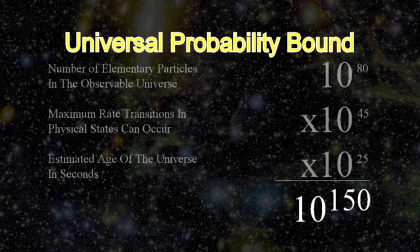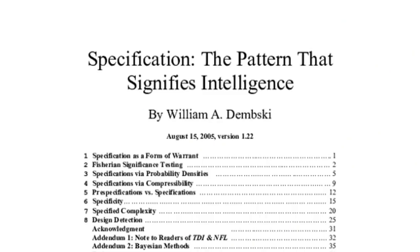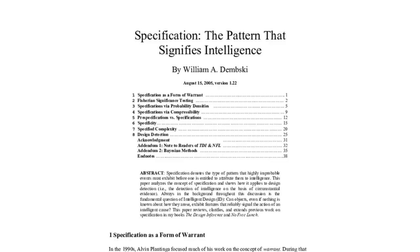Therefore, any event occurring within the universe has a probability of 1 times 10^150. In 2005, Dembski restated his bound in more practical terms in the addendum to his paper's specification — the pattern that signifies intelligence — in the evangelical journal Philosophia Christi, using Seth Lloyd's 10^120 upper limit on the number of bit operations possible in the observable universe throughout its multi-billion year history, and multiplying it by the descriptive complexity of an event.